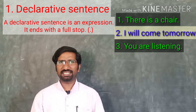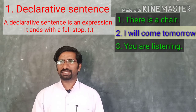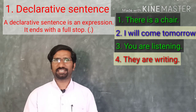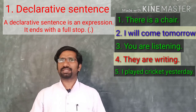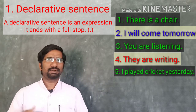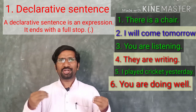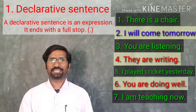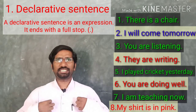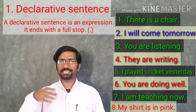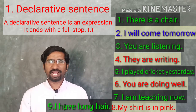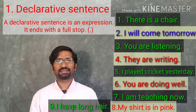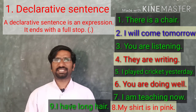More examples: 'They are writing' — declarative sentence. 'I played cricket yesterday' — declarative sentence. 'You are doing well' — declarative sentence. 'I am teaching' — declarative sentence. 'My shirt is pink' — declarative sentence. 'I have long hair' — declarative sentence. A declarative sentence is a statement, a comment, or information.